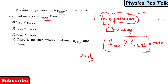Remember this concept: for alloys, resistivity is always greater when compared to the constituent metals. So option C is the correct answer for this question.